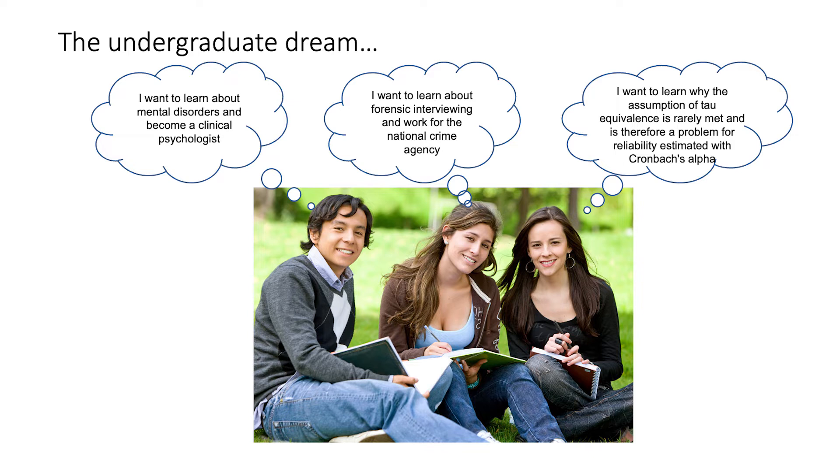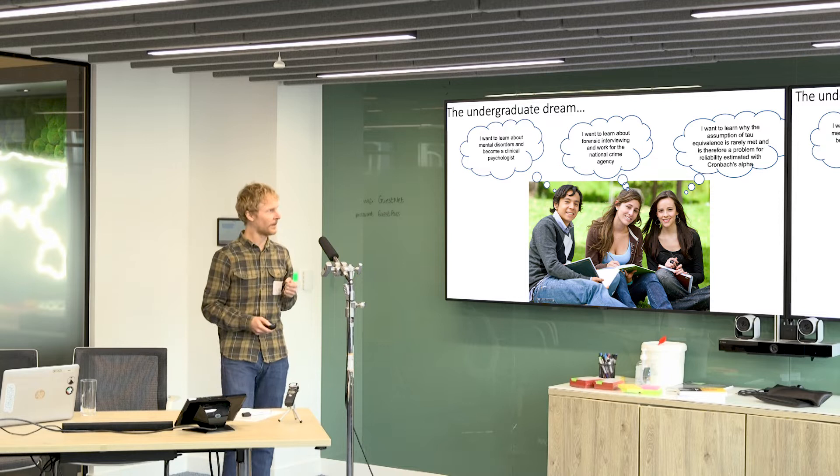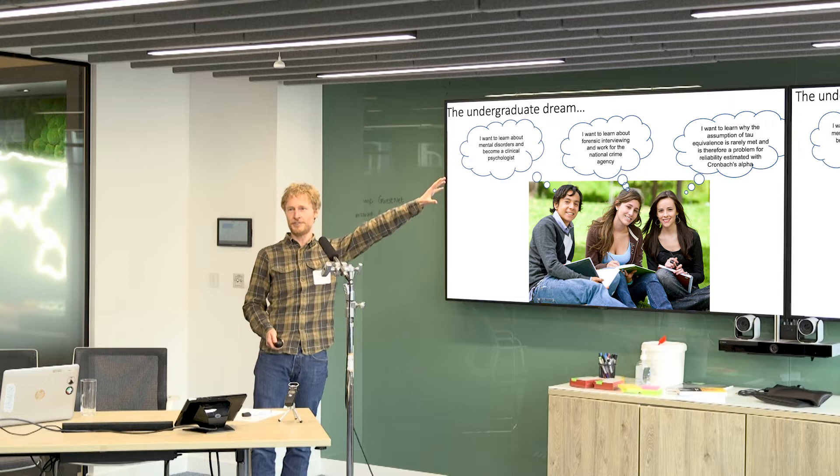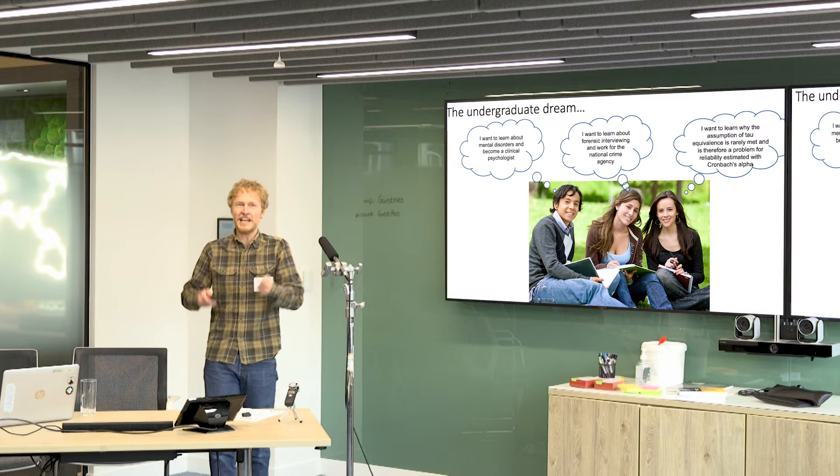We get, you know, this guy: 'I want to learn about mental disorders and become a clinical psychologist.' 'I want to learn about forensic interviewing and work for the National Crime Agency.' And then of course we get 'I want to learn why the assumption of tau equivalence is rarely met and is therefore a problem for reliability estimated in Cronbach's alpha.' That is your rocking horse poo student—doesn't exist. No one's coming in.